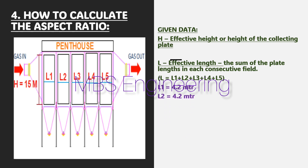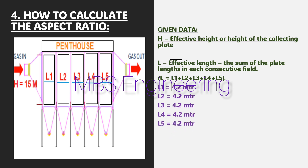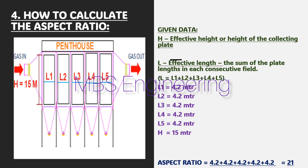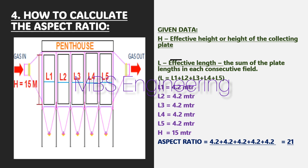Please refer to the schematic layout. H is the effective height or height of the collecting plate — given as 15 meters. L1, L2, L3, L4, and L5 are marked in the schematic layout. L is the effective length, the sum of the plate lengths in each consecutive field. Given data: L1 = 4.2 m, L2 = 4.2 m, L3 = 4.2 m, L4 = 4.2 m, L5 = 4.2 m, H = 15 m.